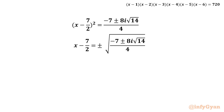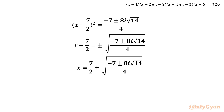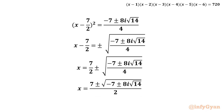Adding 7/2 to both sides to isolate x, we get x = 7/2 ± √[(−7 ± 8i√14) / 4]. Since √4 = 2 in the denominator, we can write this with a common denominator of 2: x = [7 ± √(−7 ± 8i√14)] / 2. This yields four complex solutions.